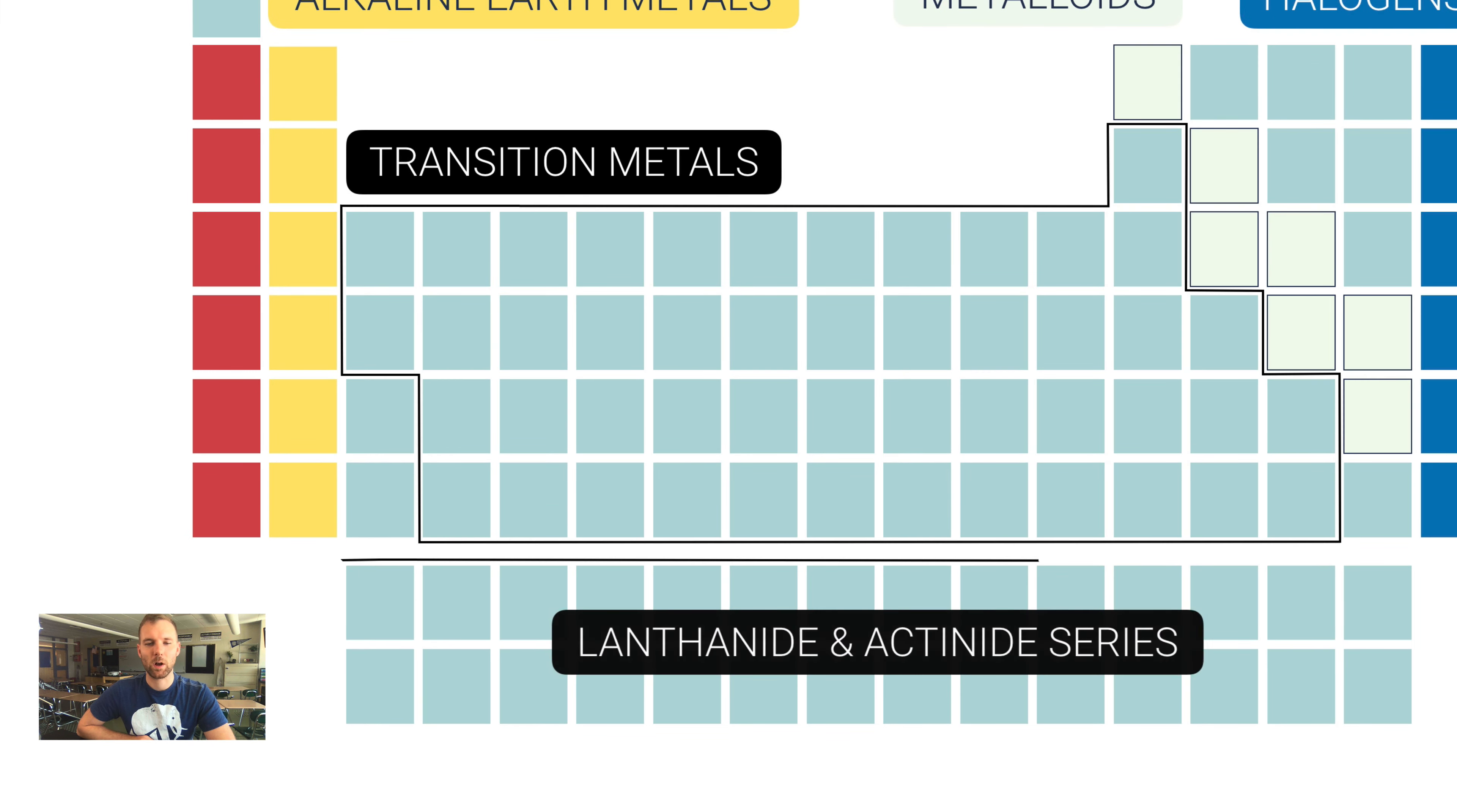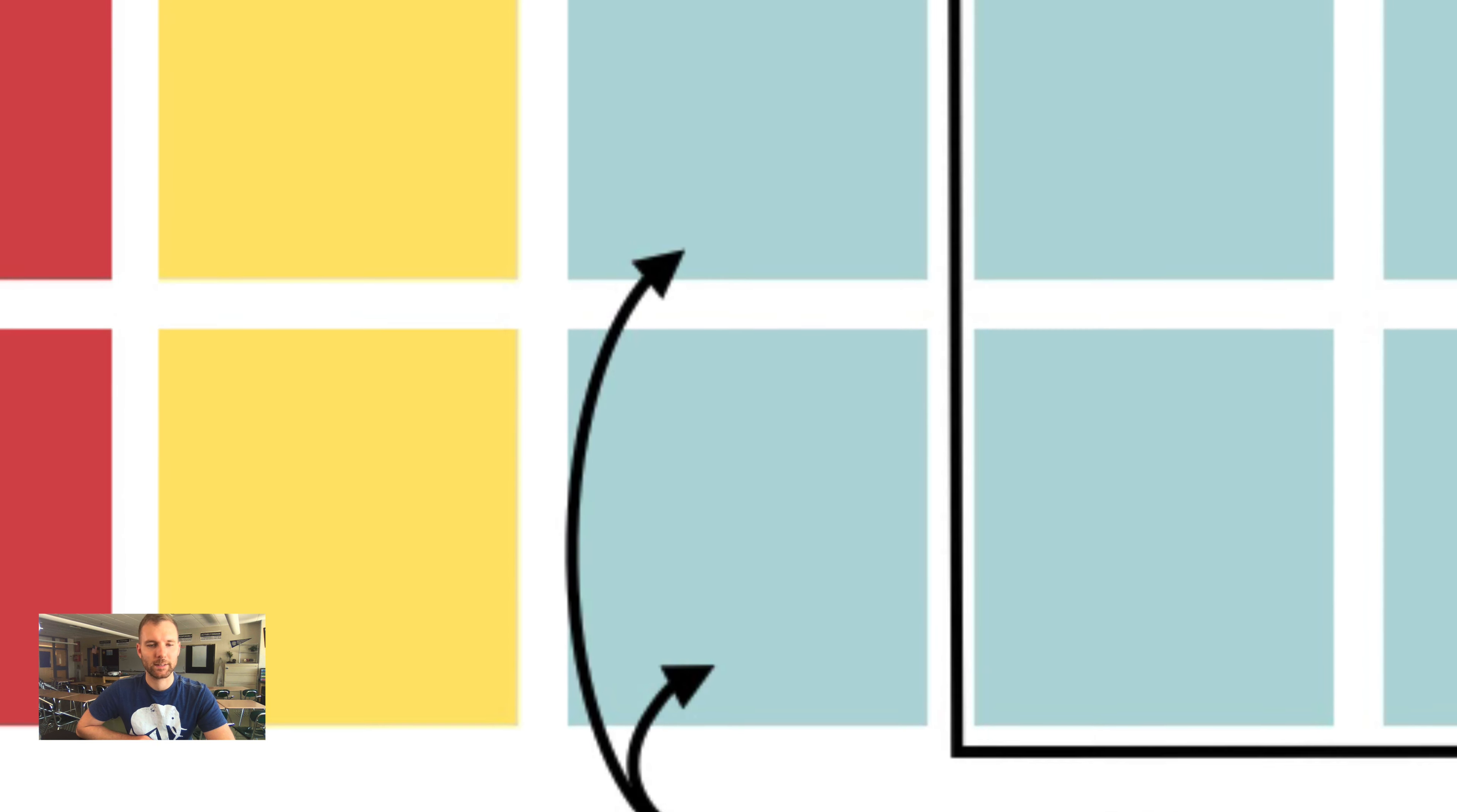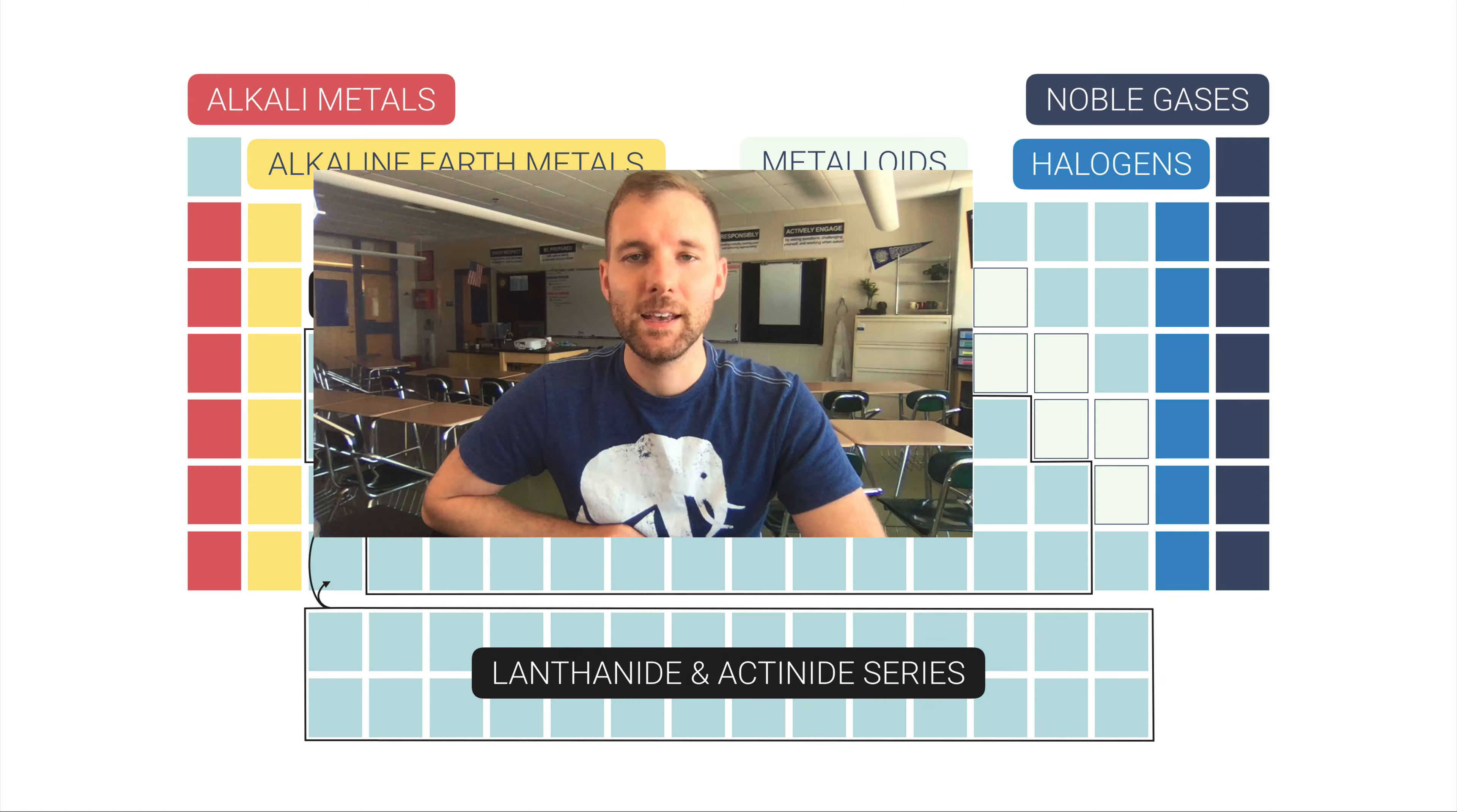But this bottom piece here, this is called the lanthanide series and the actinide series, and they're named after the elements that lead them off in that period. So this is lanthanum and actinium, and so that's why this bottom piece is just called the lanthanide series for the top row and then the bottom row is actinide series.